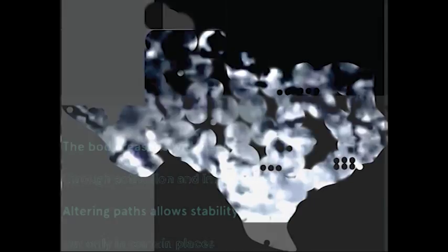Inhibiting paths allows intentionality. The body reasons with itself through activation and inhibition. Altering paths allows stability, but only in certain places.